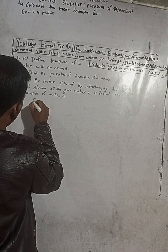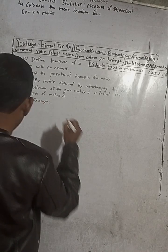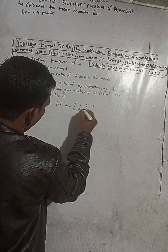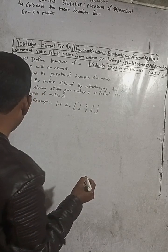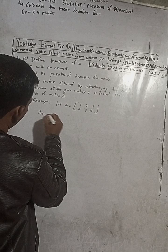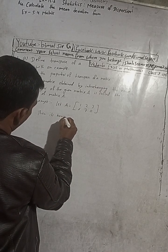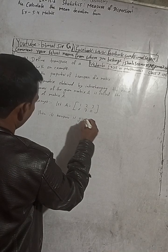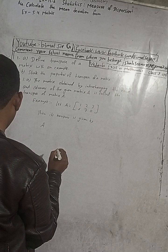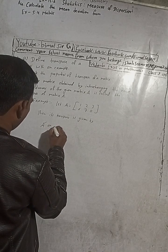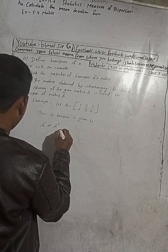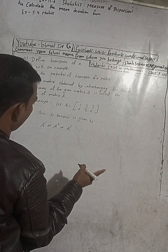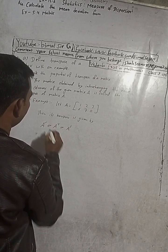Now with an example: let A be equal to the matrix with entries one, two, three in the first row and six, seven, zero in the second row. Then its transpose is given by — it is denoted by A-dash, or A with capital T superscript, or A with small t. You can write any one of these notations.